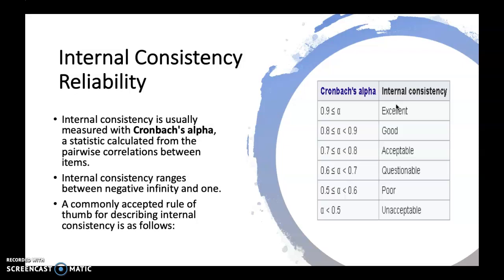So basically, when you run a research and conduct a pilot study, you need to find the internal consistency of the reliability using Cronbach's alpha if it involves scale items. What you want is for the value to be more than 0.7, so that it is acceptable, good, or excellent for internal consistency.